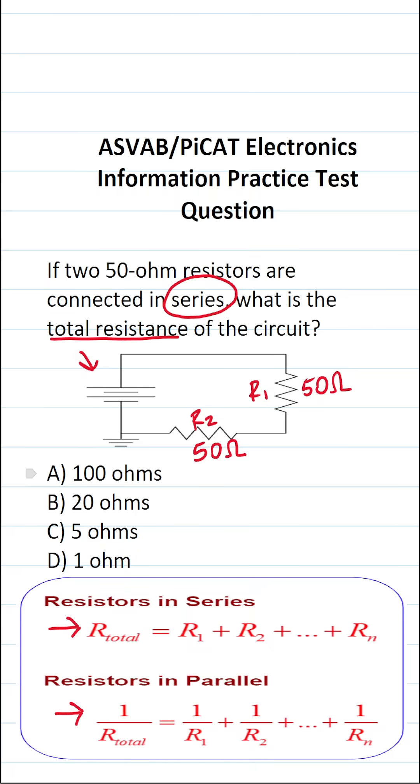All right, so since our resistors are in series, the total resistance R of T is simply going to be R1 plus R2. That is to say, we're just going to add them together.